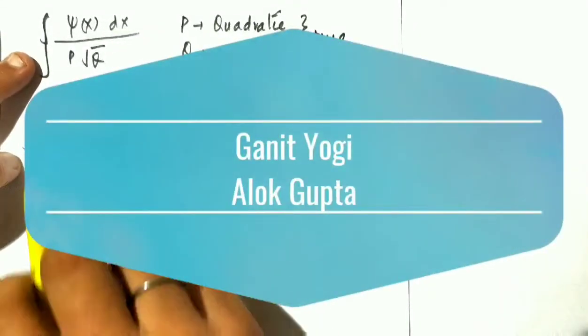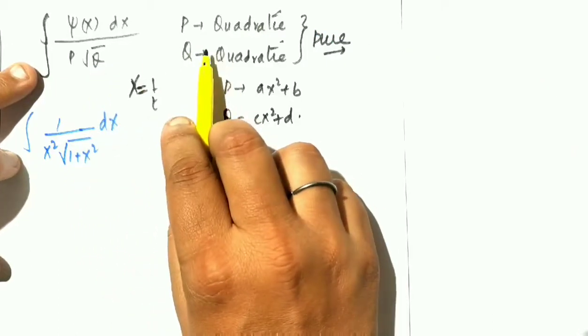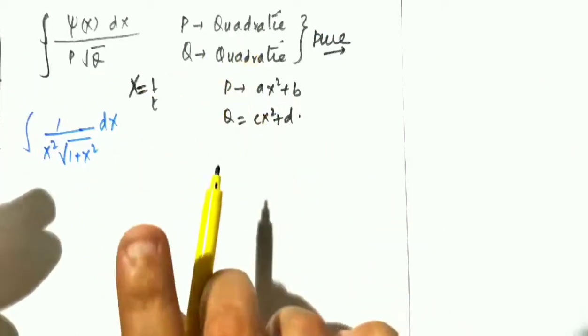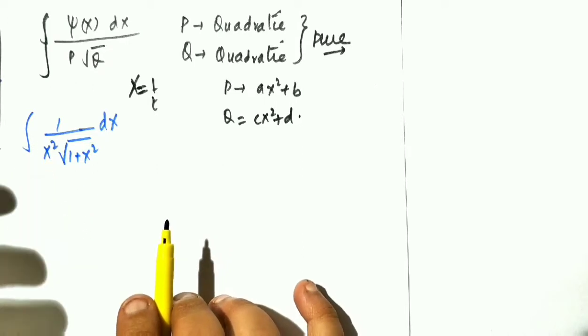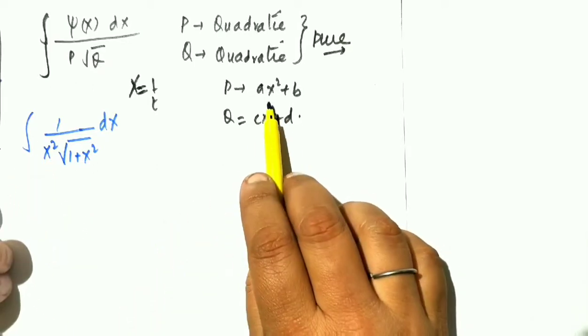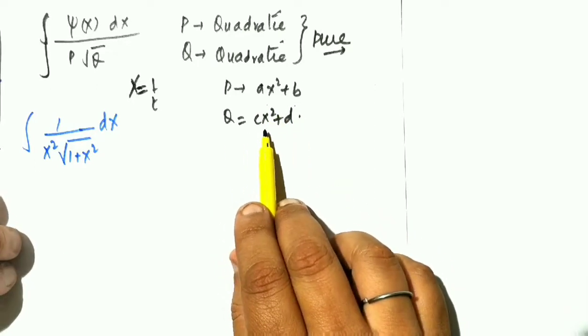So integral of the type psi x upon p root q, where p and q are quadratic expressions, but they are pure quadratic. So what's the difference between quadratic and pure quadratic? That p should form ax square plus b and q should form cx square plus d.